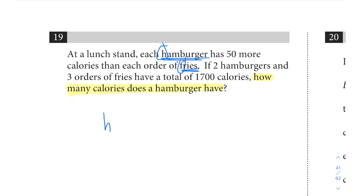Each hamburger, so h, has 50 more than the fries, or f plus 50. So h would be equivalent to f plus 50. That's one equation. Now let's see if we can come up with a second equation. If 2 hamburgers and 3 fries, so 2h and 3f, have a total of 1700. Okay, so I'm at a good place. I have my two equations.